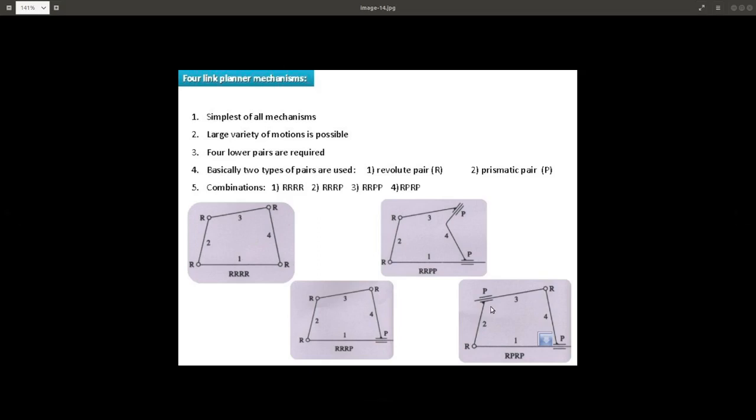A prismatic pair will be next to a revolute pair or in between two revolute pairs. That is how these two things are different even though the number of revolute pairs and number of prismatic pairs are same.